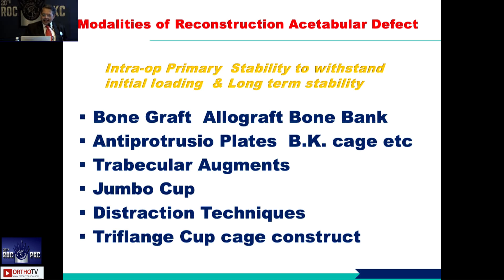Modalities of reconstruction include bone graft, allograft, anti-protrusion plate, and trabecular metal — which is very important and gives excellent osteointegration, proven beyond doubt. Jumbo cup has a role in some cases, as do distraction technique and tri-flange cup.